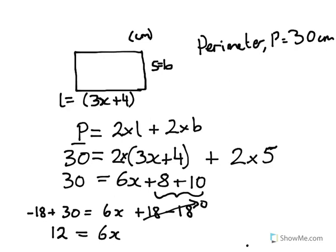To get what 1 lot of x is, I don't want to know what 6 lots of x is, I want to know what 1 is. I divide both sides by 6. 12 divided by 6 is 2. 6x divided by 6 is x. So we know now that x equals 2.